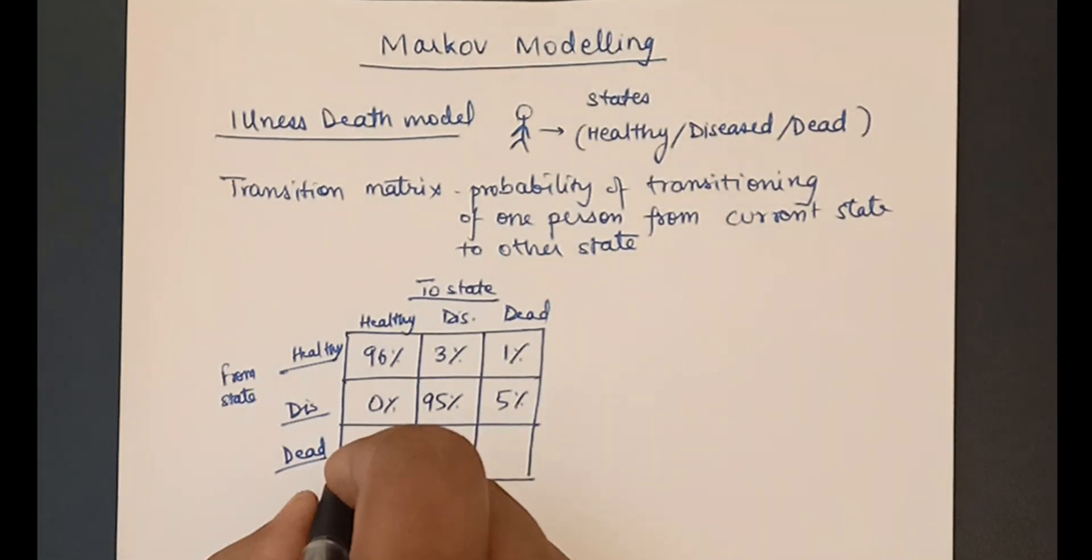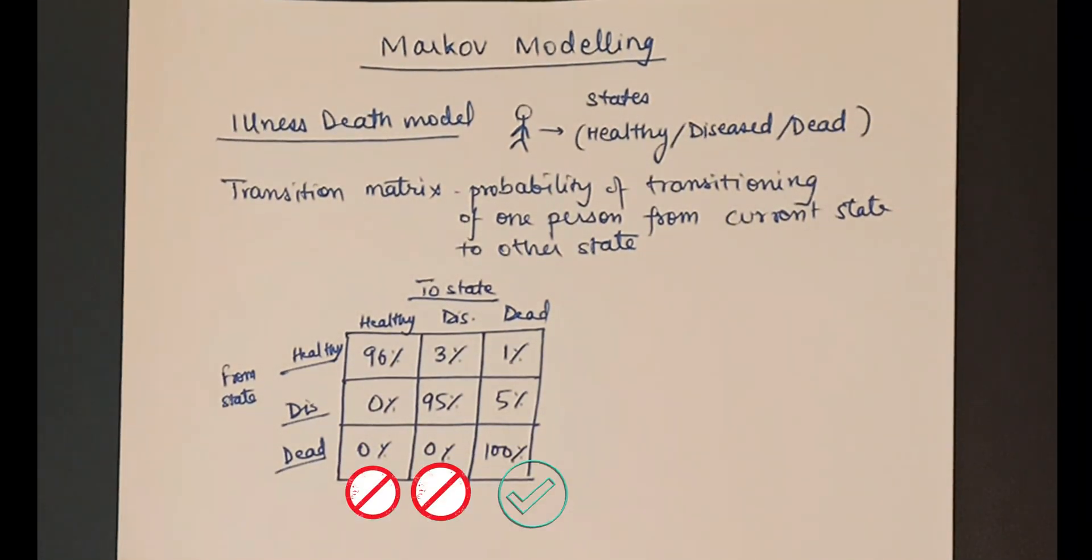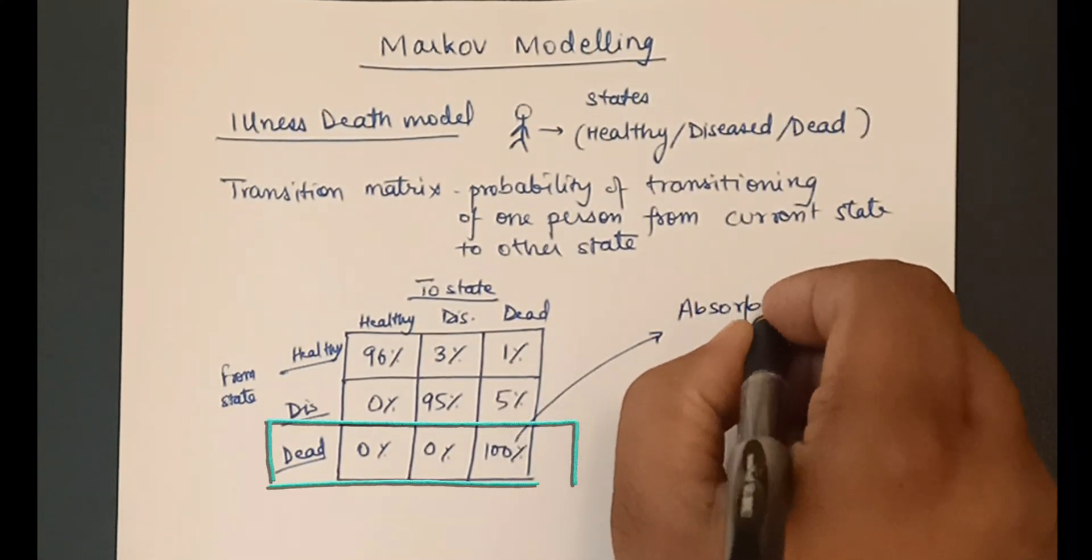If a person is in the dead state, he can't become diseased. He can only remain in the dead state. Such groups or states where you can't come out of is called the absorbing state.